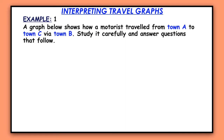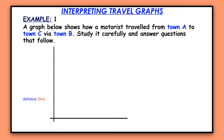A graph below shows how a motorist traveled from town A to town C via town B. Study it carefully and answer the questions that follow. Here is our graph. On the vertical axis we have distance in kilometers and the horizontal axis we have time in hours. Interpreting graphs requires answering questions asked about the graph. Before you attempt questions, you need to know that the horizontal axis on a graph represents resting time.